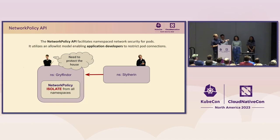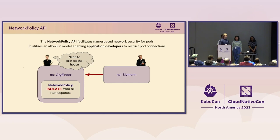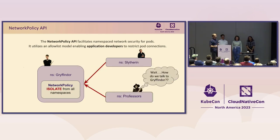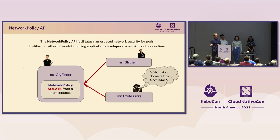Network policy was explicitly made to be namespaced — it was not cluster-scoped, and it was only for the application developer. When Harry creates a network policy in the Gryffindor namespace, it implicitly isolates the Gryffindor namespace from everything. We're just seeing the Slytherin side here, but we also accidentally block traffic from professors. Shouldn't professors be allowed to talk to every student namespace? This is a problem.